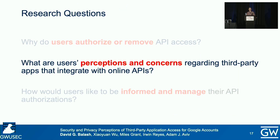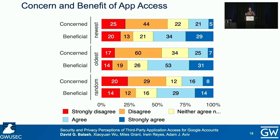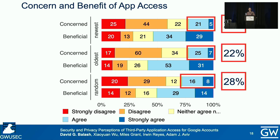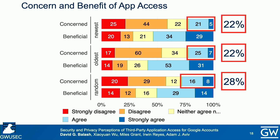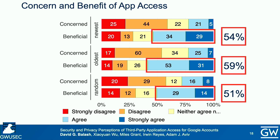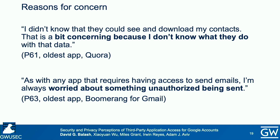We presented participants with their newest and oldest apps by install date, along with a random app they had installed. When asked if they were concerned about the app having account access, a quarter of participants agreed or strongly agreed that they were concerned. When asked if the access was beneficial, over half agreed or strongly agreed that it was beneficial. When asked to explain their reasons for concern, common response themes included concerns about access to personal or sensitive information, unnecessary access, and access to contacts and email.